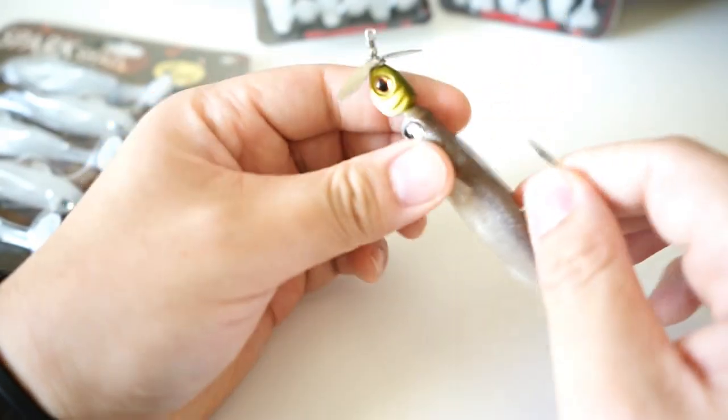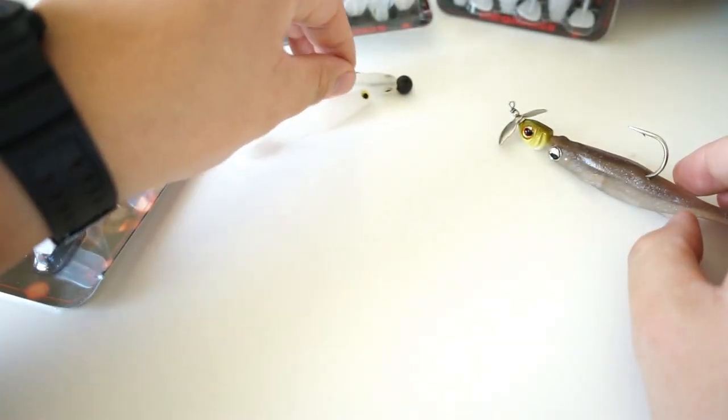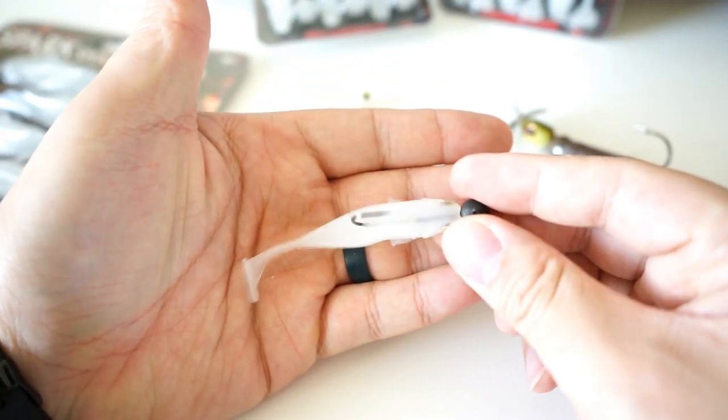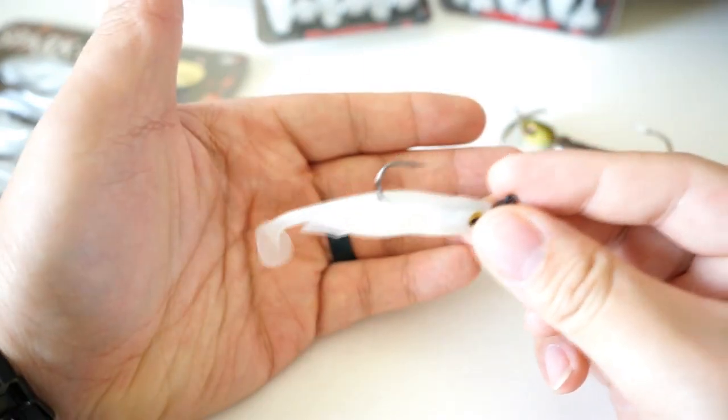You can even rig this with a swimbait hook with a belly weight if you like. You can fish it weedless because it's got the flat top, so the hook can sit right on top if you want to rig it with a swimbait hook with the belly weight on it.